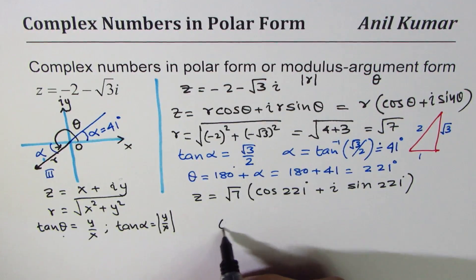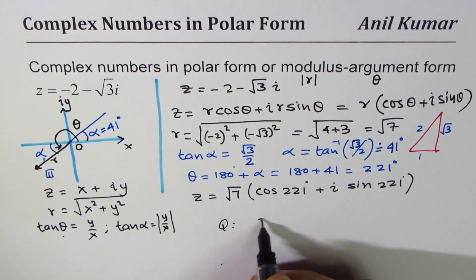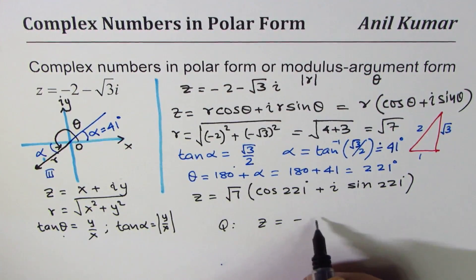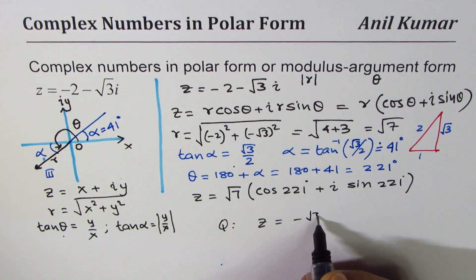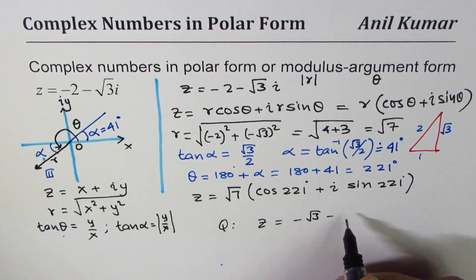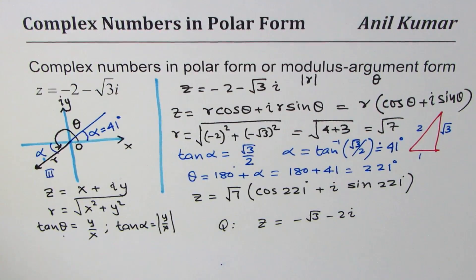I hope that helps. So you can have a practice question: let the complex number be -√3 - 2i and now write it in the polar form.